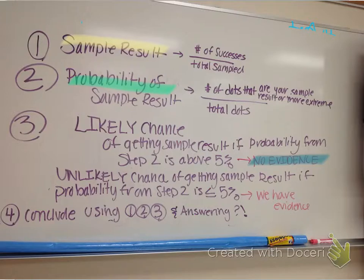What happens if the probability of getting your sample result is unlikely? Well, that means you have a probability that is less than or equal to 5%. Well, then we do have evidence for whatever that question is stating. You then need to conclude using steps one, two, three, and then answer that question.